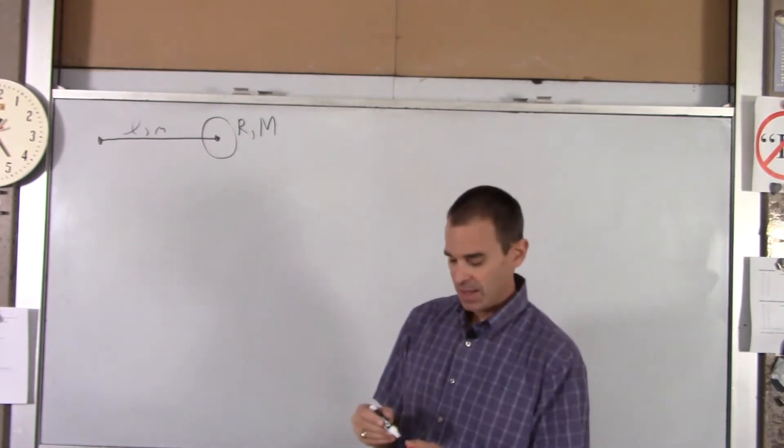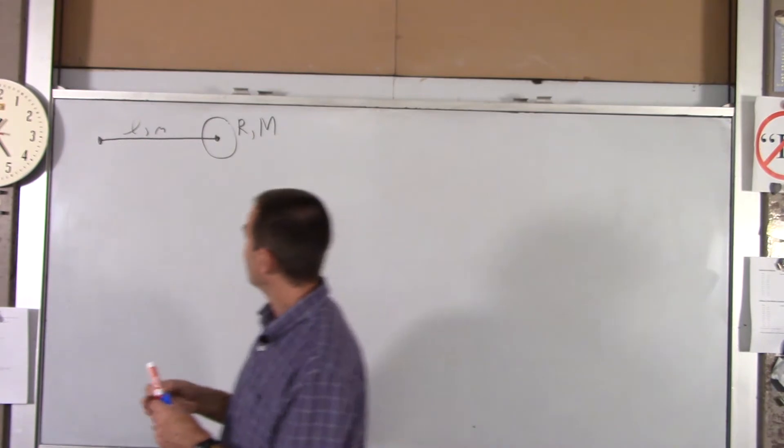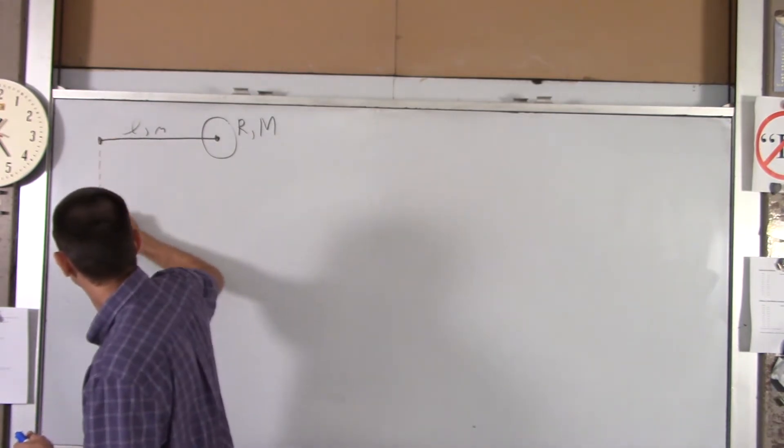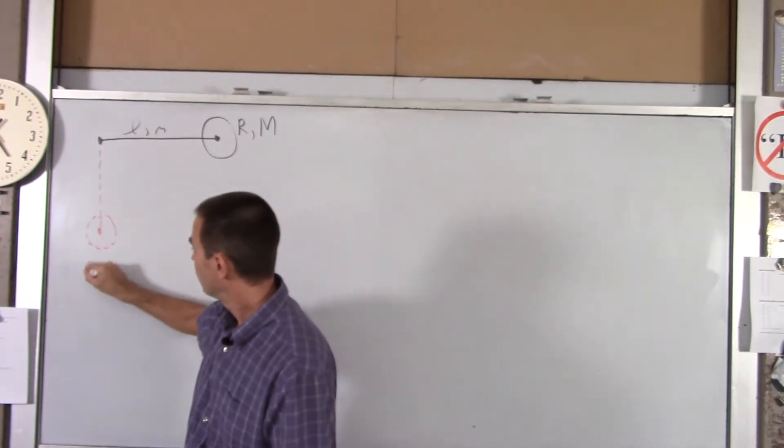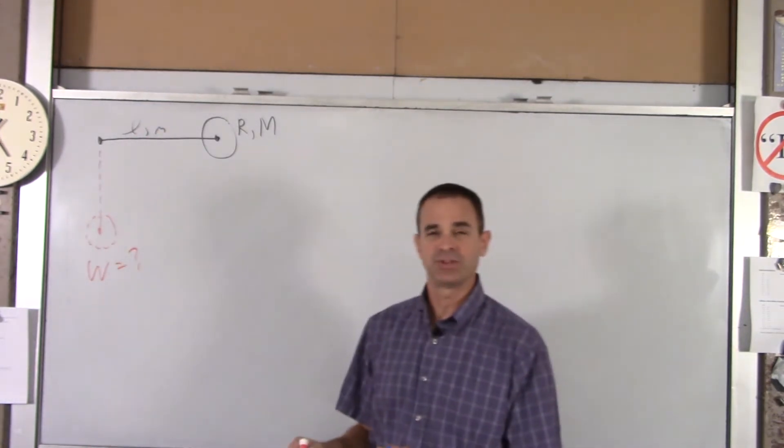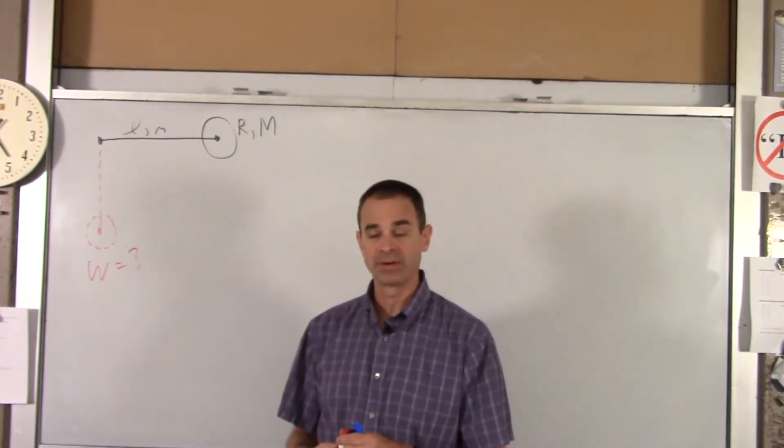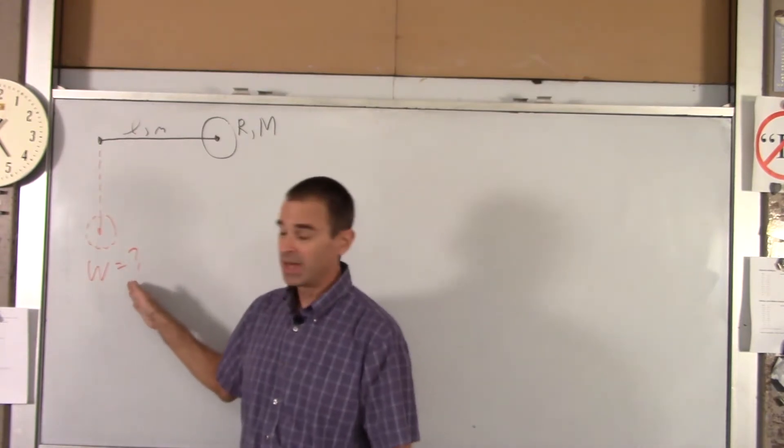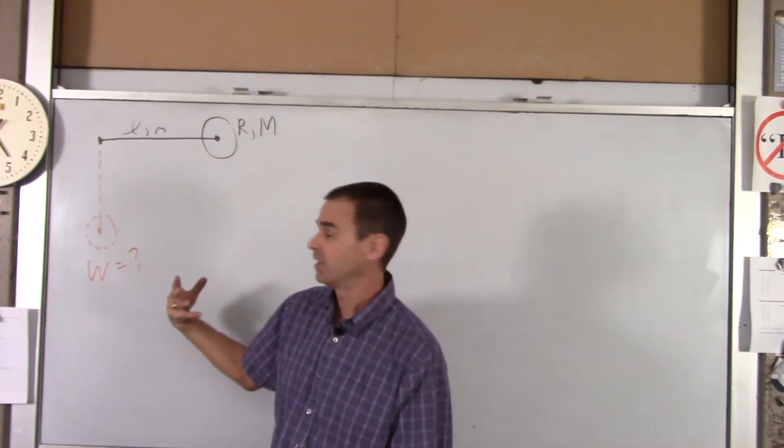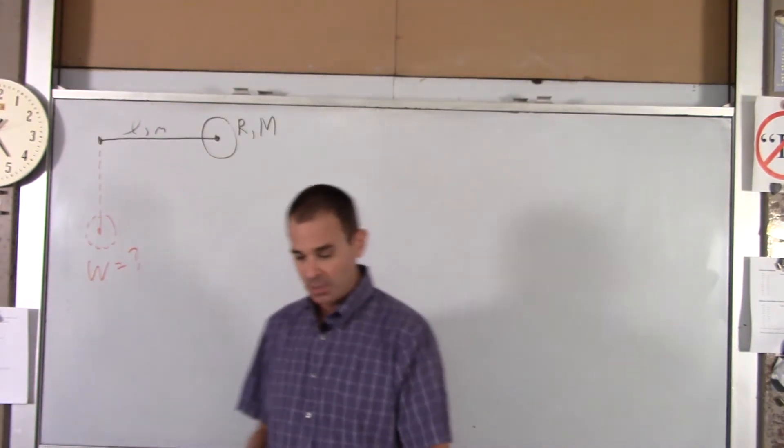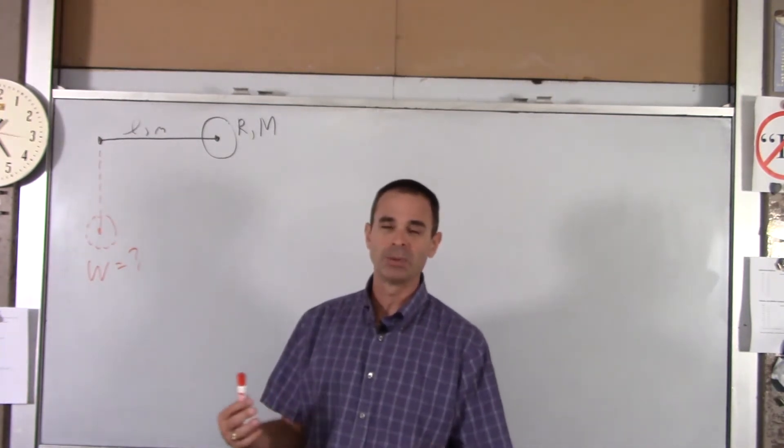Right now it's horizontal and we're going to release it from rest. When it's swung down to vertical, what is its angular velocity? That's what we want to find. Once you've got that, we'll mention briefly at the end how to find the tangential velocity of some piece of the lollipop. But first, the object is rotating, so we need to know its moment of inertia.